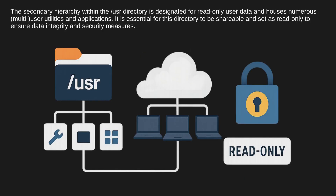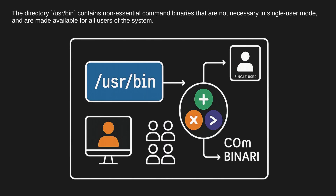The secondary hierarchy within the /usr directory is designated for read-only user data and houses numerous multi-user utilities and applications. It is essential for this directory to be shareable and set as read-only to ensure data integrity and security measures. The directory /usr/bin contains non-essential command binaries that are not necessary in single-user mode and are made available for all users of the system.